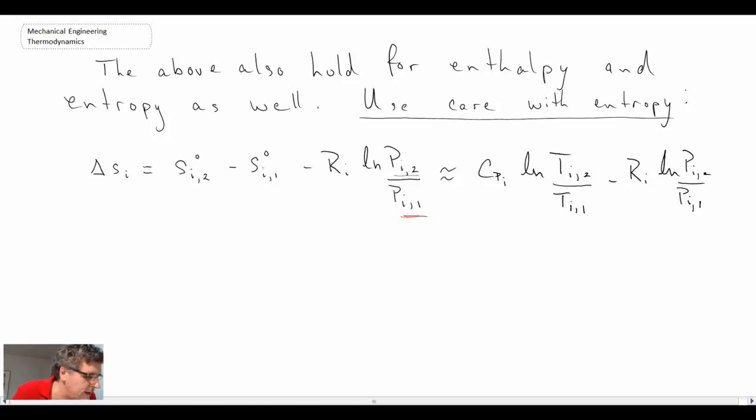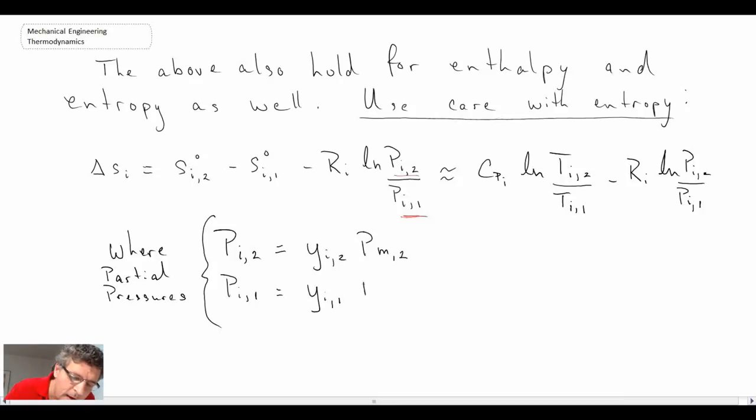That's what we're talking about when we use that nomenclature. The other thing we can say here is that the pi comma one or comma two, these are the partial pressures, the partial pressures that we talked about last lecture. If you recall, they were defined in terms of the mole fractions multiplied by the mixture pressure. Given we have comma two, we have to talk about the mixture pressure at state two. And then again, mole fraction component i at state one multiplied by the mixture pressure at state one. So that's what that is referring to.